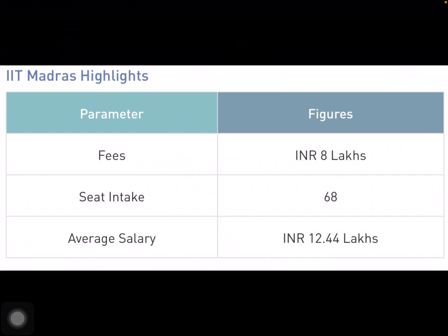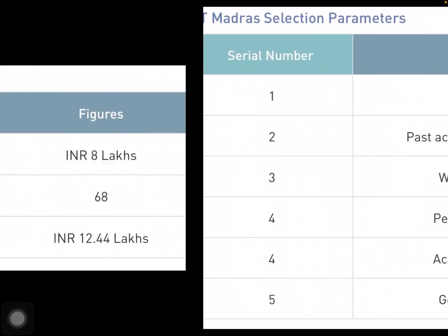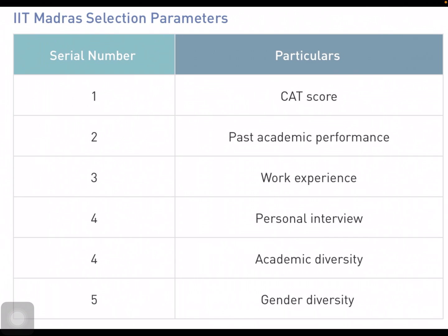For IIT Madras: fees are 8 lakhs, seat intake is 68, and average salary is around 12.44 lakhs per annum. Their selection parameters prioritize CAT score first, then past academic performance, and if you are a working professional, personal interview and academic and gender diversity are also considered. So if you have work experience, IIT Madras is one to look out for.